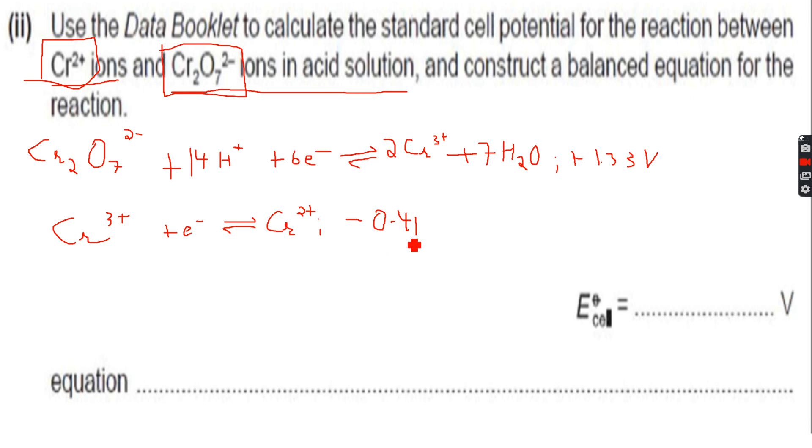Since this reaction, the second one, has a lower E°, we have to invert this reaction. So this becomes Cr²⁺ → Cr³⁺ + e⁻. Now this also gets inverted, so this becomes +0.41. We add these two together: 1.33 + 0.41, which gives +1.74 volts.